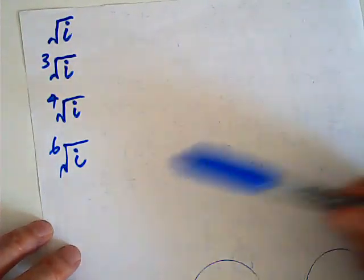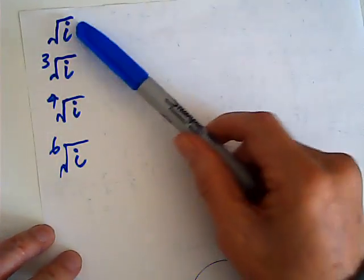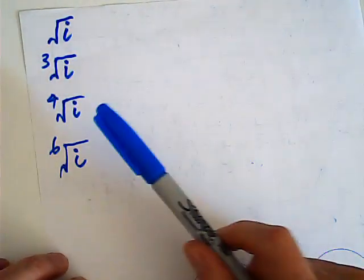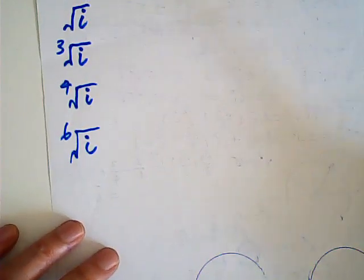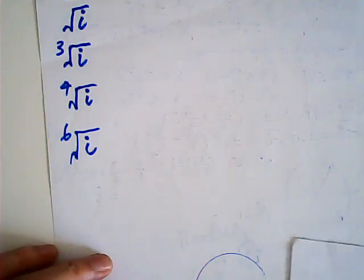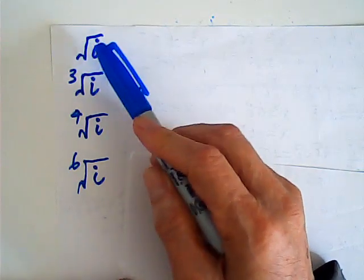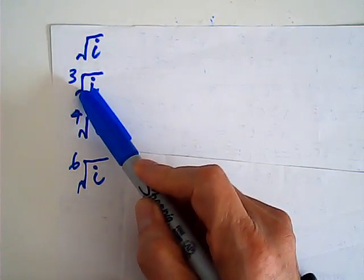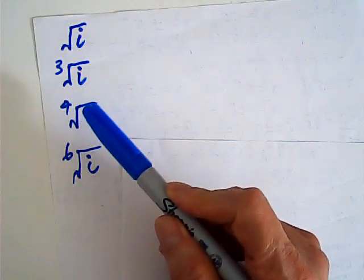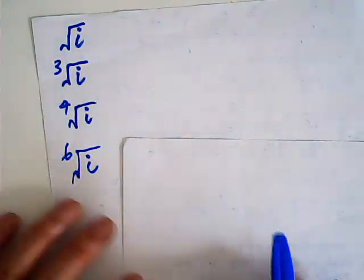I would like to introduce my way of finding these roots: the square root of i, the cube root of i, the fourth root of i, and the sixth root of i, and so on. We know that the square root has two roots, the cube root has three roots in complex numbers, the fourth root has four roots, and the sixth root has six roots, and so on.